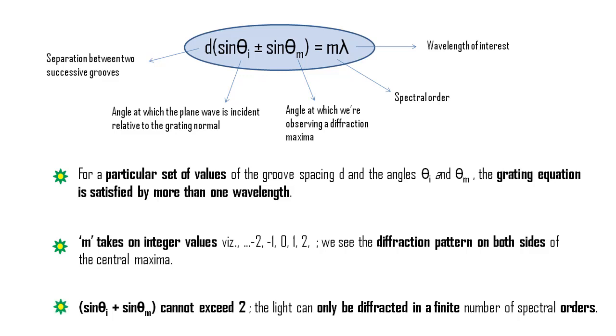Lastly, only those spectral orders for which the absolute value of m lambda by d is less than 2 can exist. If this is not the case, sin theta i plus sin theta m would exceed 2 which is physically meaningless. This restriction prevents light of wavelength lambda from being diffracted in more than a finite number of orders.